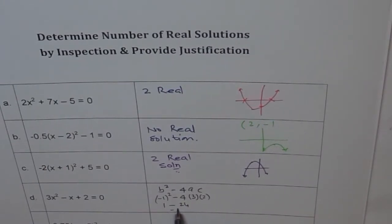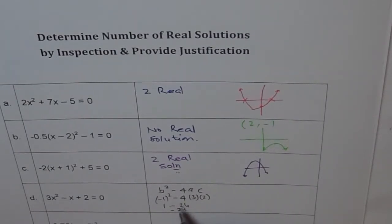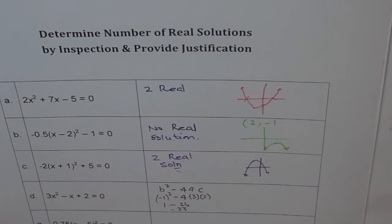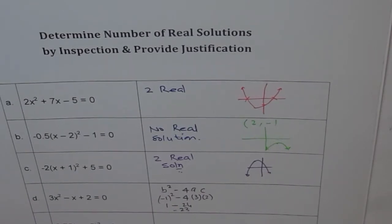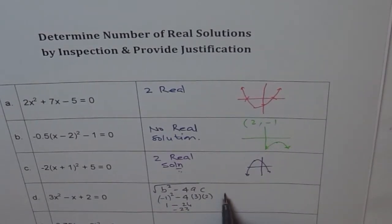So it clearly indicates that this is 1 minus a big number, 24 in this case, which is negative, -23. We need not do all the calculation, but it really indicates that the discriminant is negative. Therefore, anything under the square root if that is negative, then what do you expect? None.